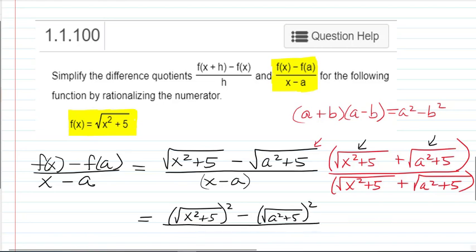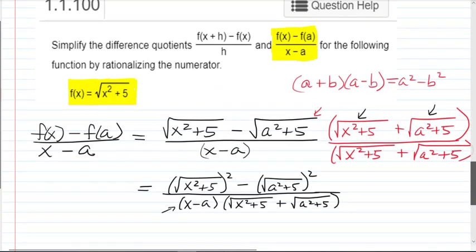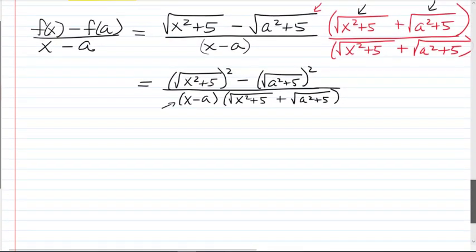And in the denominator, we're just going to have x minus a times square root x squared plus 5 plus the square root of a squared plus 5. We're not going to distribute that because our goal is really to cancel this x minus a factor. And so leaving it in factored form is a good idea.